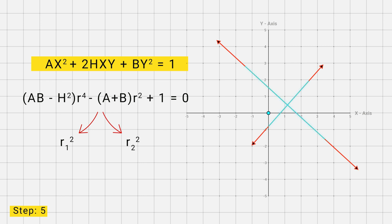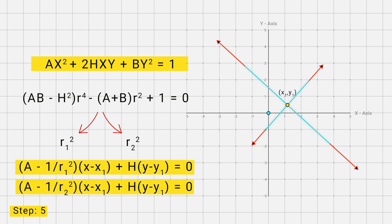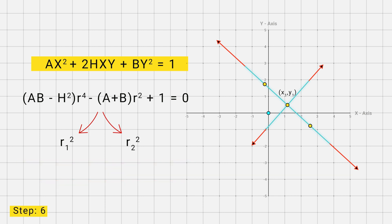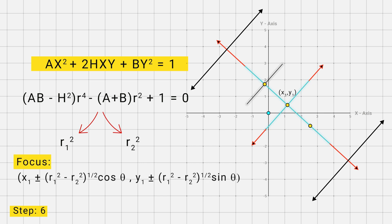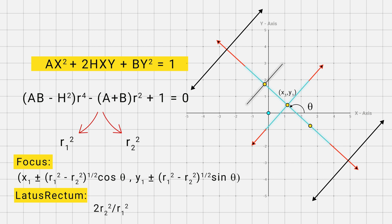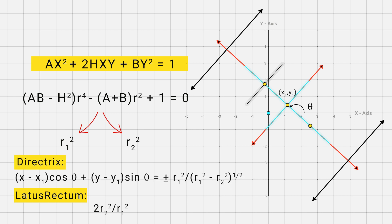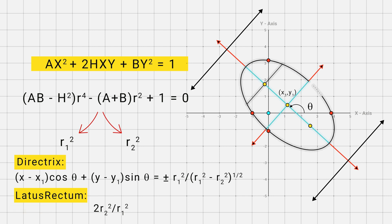Our fifth step is to find the equation of the major and minor axes using specific formulas, where x1 and y1 is the center of the conic. Our sixth step is to find the focus, latus rectum, and directrix. The focus is computed using the angle theta, which is the angle of the major or transverse axis to the x-axis. The latus rectum equals 2r2 squared divided by r1, and the equation of the directrix is set equal to 0. Finally, we find the coordinates where the conic meets the coordinate axes by putting x equal to 0 or y equal to 0. This gives the complete sketch of the conic.